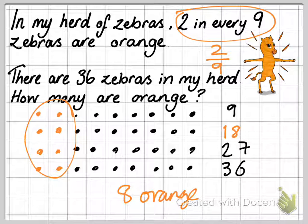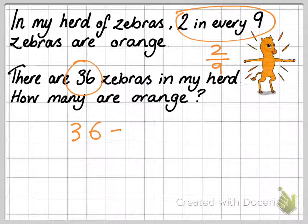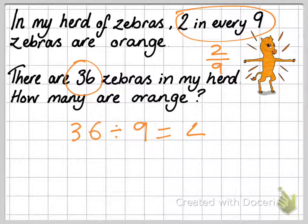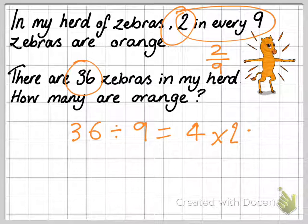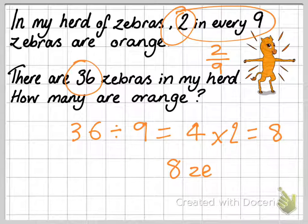Now, I could work this out a different way if I wanted to. It would have been quicker for me to say to myself, 36 divided by 9. How many 9s are in 36? Well, there's 4. And then I could have multiplied 4 by the 2 orange zebras. And that would have given me 8 orange zebras.